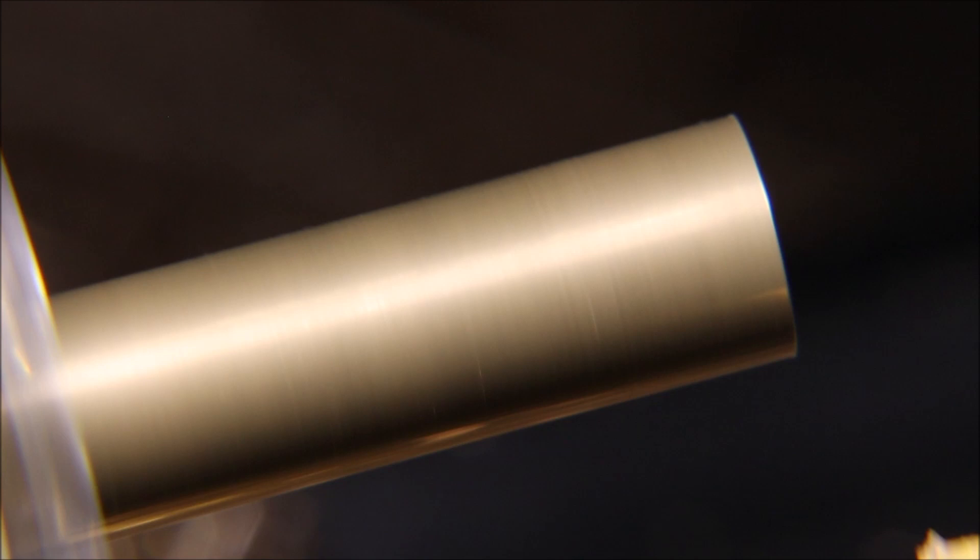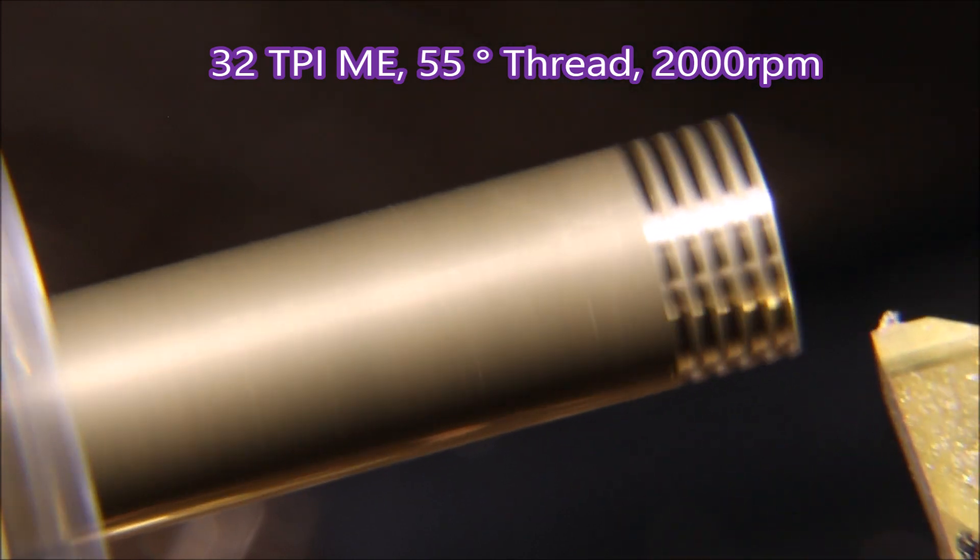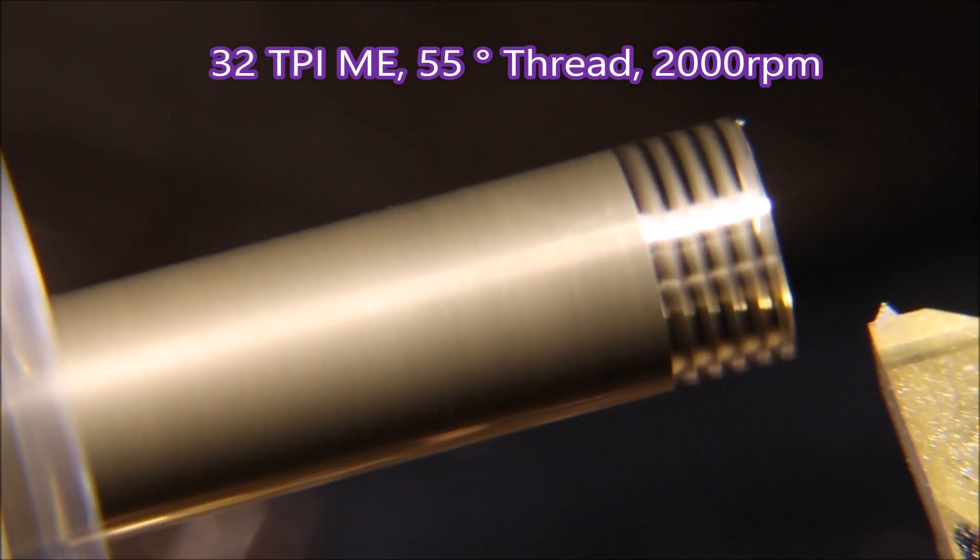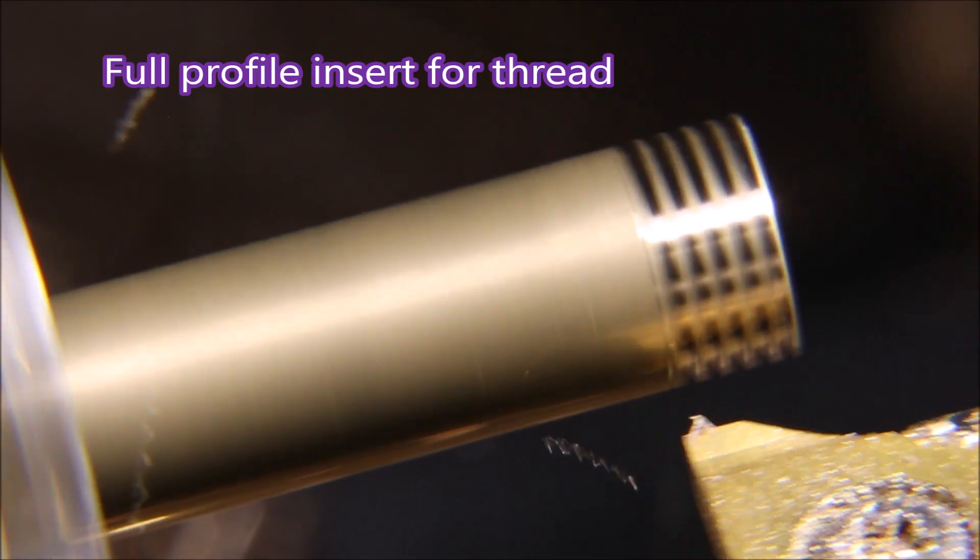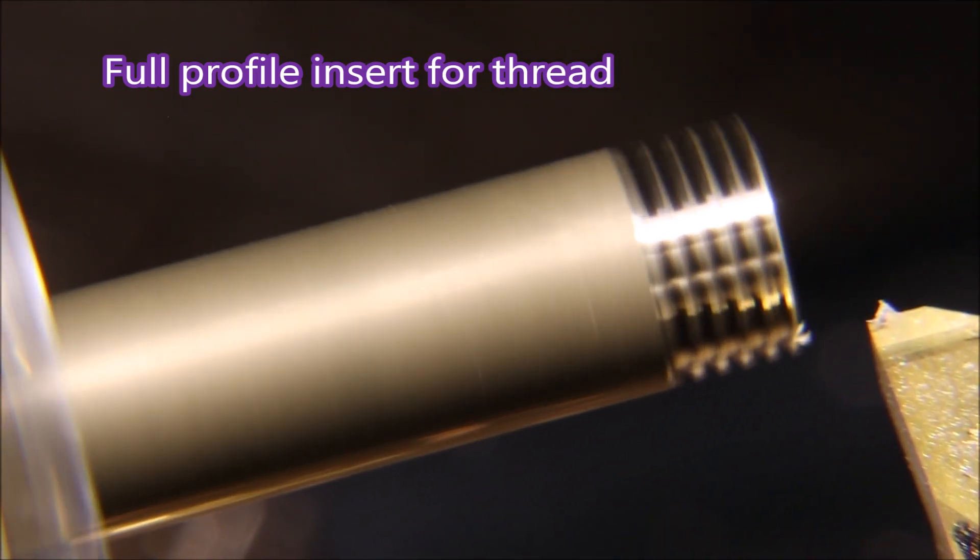The thread we're cutting on this is a 32 TPI model engineer thread with a 55 degree thread angle. Running the machine at 2000 RPM; it would cut it at 3000 RPM, but the acceleration and deceleration just bangs about too much. I'd rather be a bit easier on the machine.